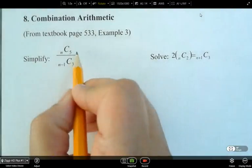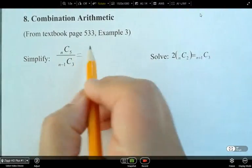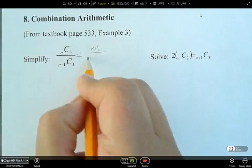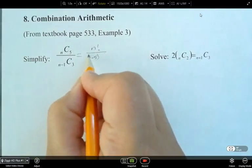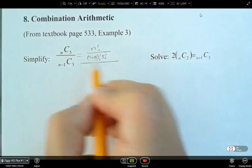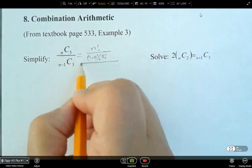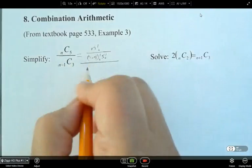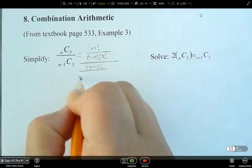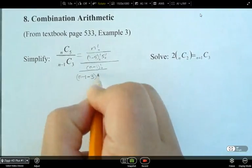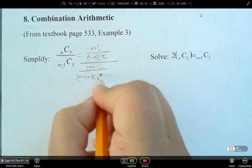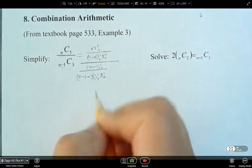The first thing to do always in this case is write out what it is in terms of factorial notation. So this is going to be n factorial divided by n minus 5 factorial and 5 factorial there. And we have another big divide. Then we're going to write this bottom expression here. So n minus 1 factorial divided by n minus 1 minus 3 factorial. Now it's n minus 1 because of this here and then it's minus 3 because of that right there. And then times 3 factorial.